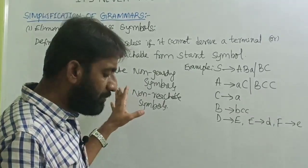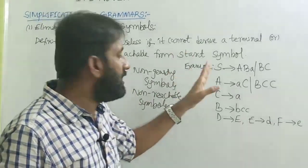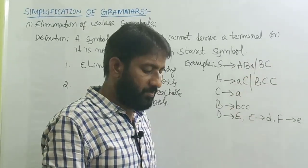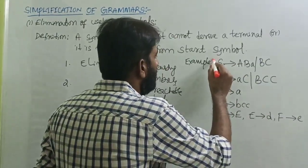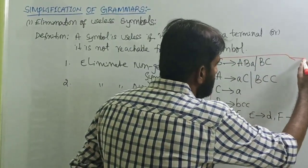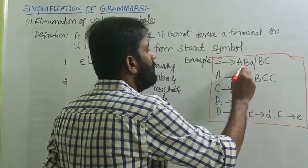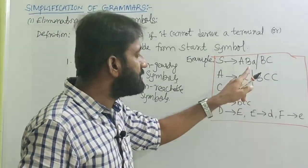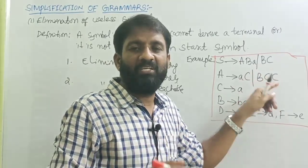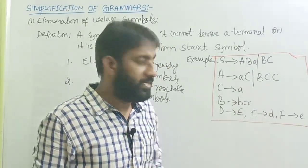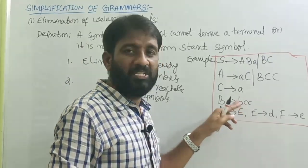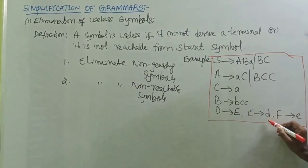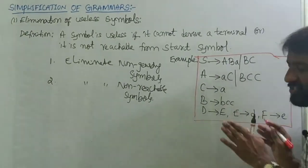Apply these two steps to eliminate useless symbols from this grammar. The grammar is: S → AB | a, B → BC. Then A → aC | B, C → a, B → bCC. Then D → E, E → D, and F → E.